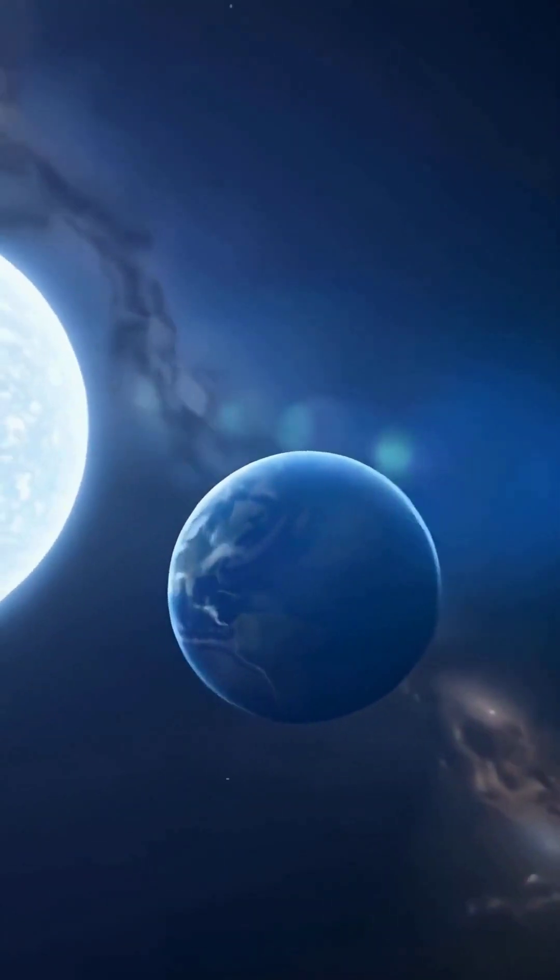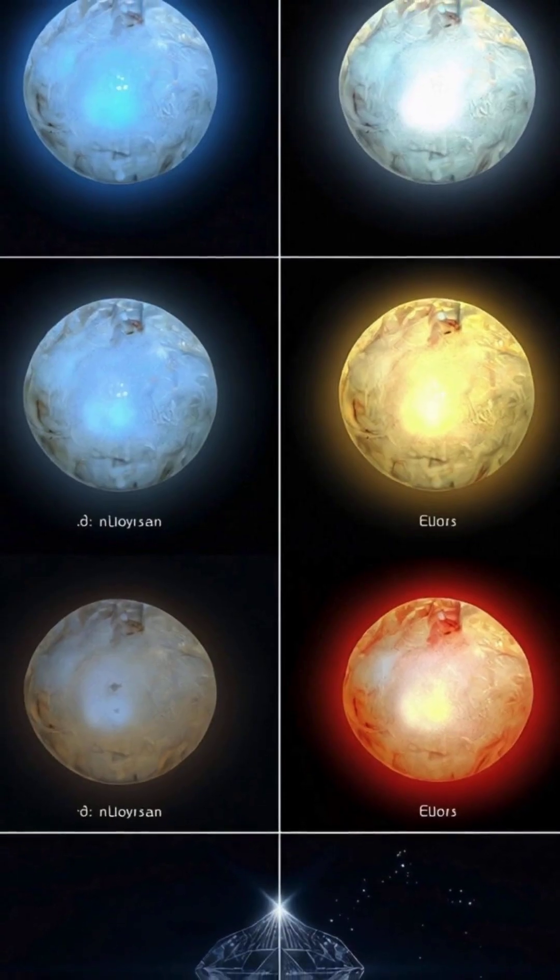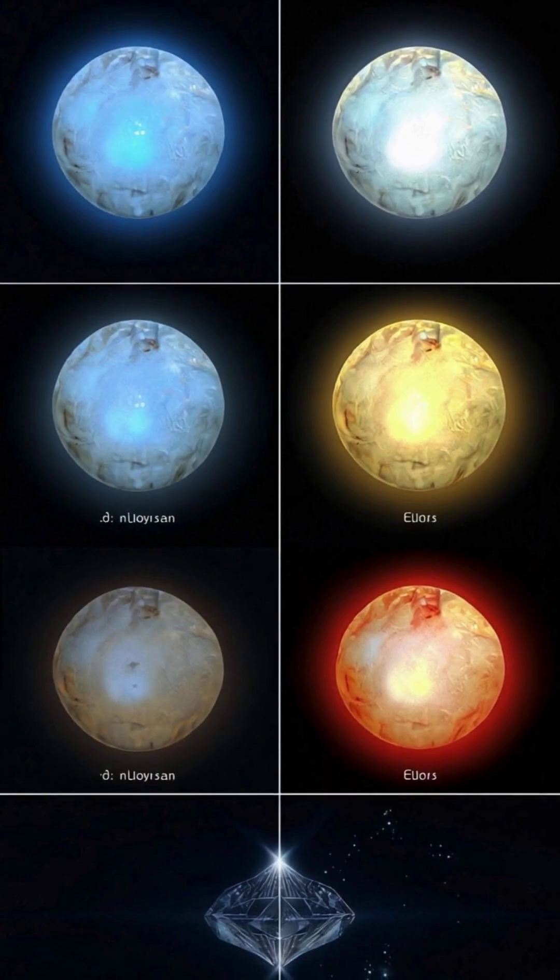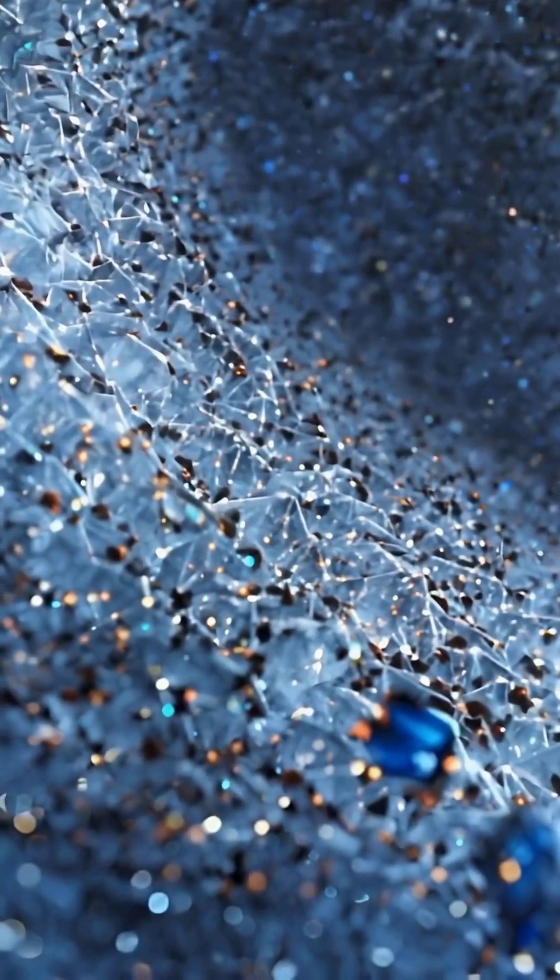As this white dwarf cools over billions of years, its carbon and oxygen will crystallize, essentially creating a cosmic diamond about 10,000 kilometers across.